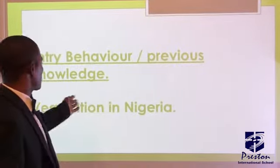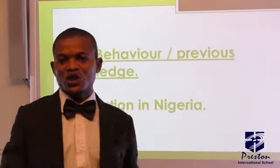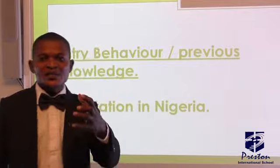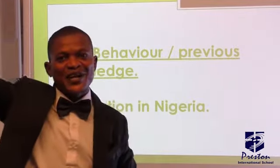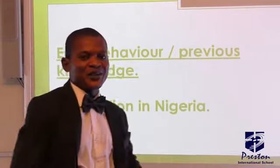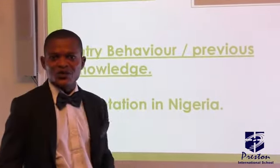Remember in the last class we looked at vegetation in Nigeria. I told you we have five major vegetation belts: the mangrove swamp forests, the rainforests, the Guinea savannah, the Sudan savannah, and the Sahel savannah in the far northeastern part of Nigeria.